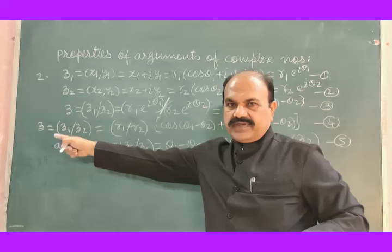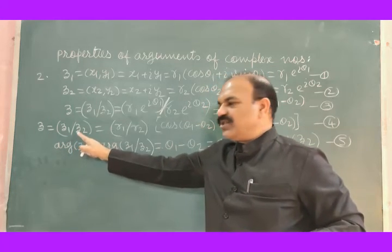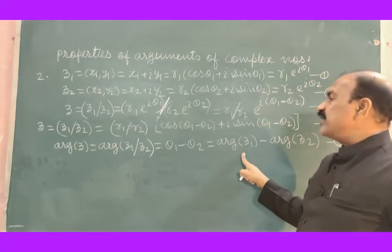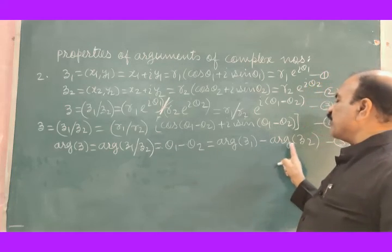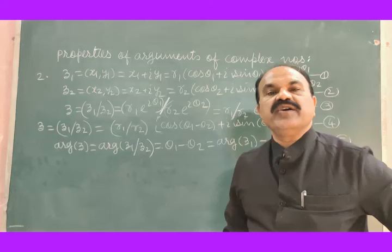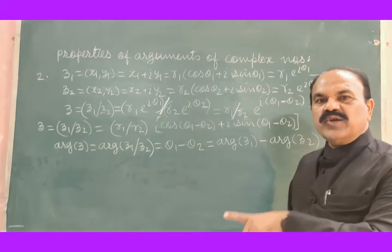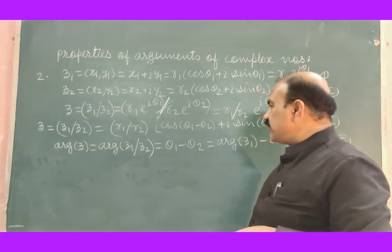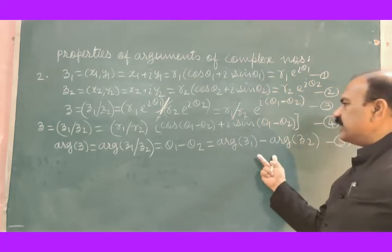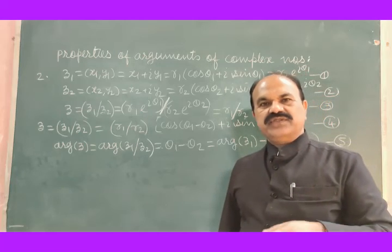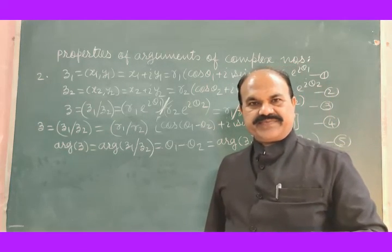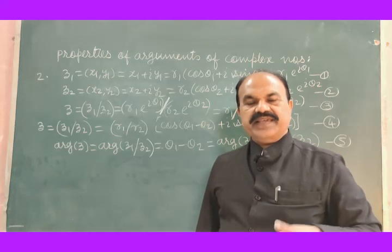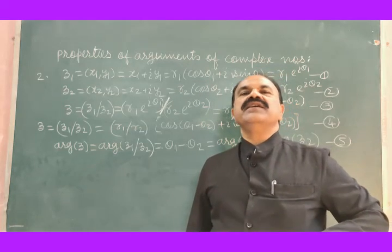This can be written further as R1 divided by R2 into square bracket cos(θ1 minus θ2) plus i sin(θ1 minus θ2), as equations 3 and 4. Taking the argument of Z: argument of Z1 divided by Z2 equals θ1 minus θ2, which is argument of Z1 minus argument of Z2. This is the meaning of equation 5 — argument of the quotient or division of two complex numbers is always equal to the difference of their arguments.